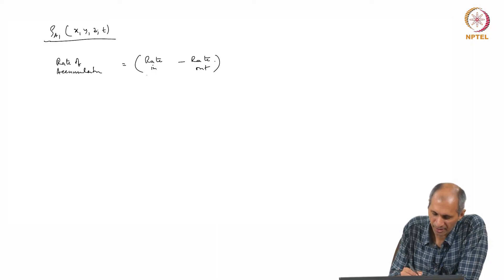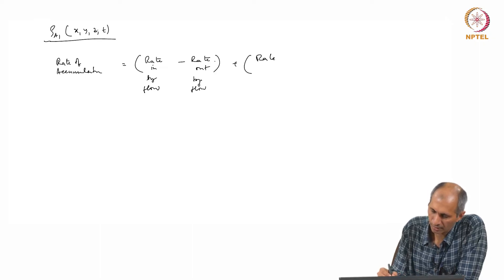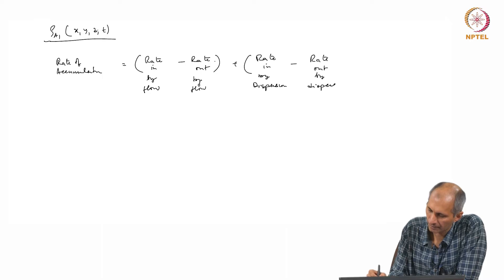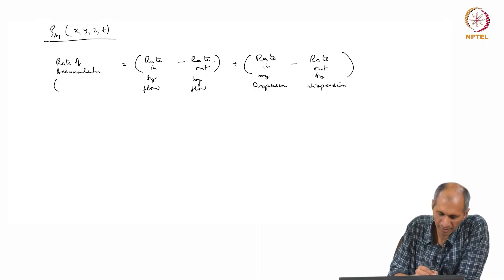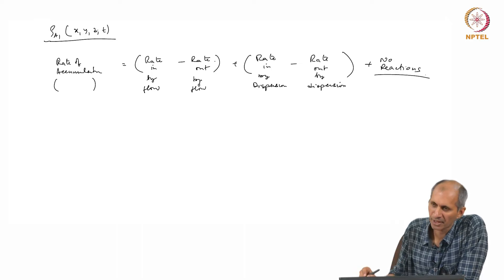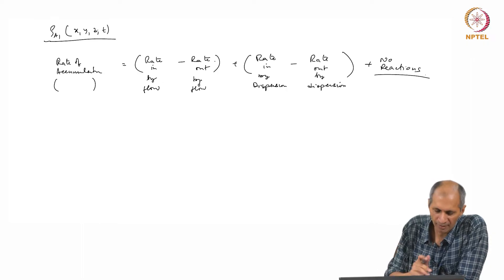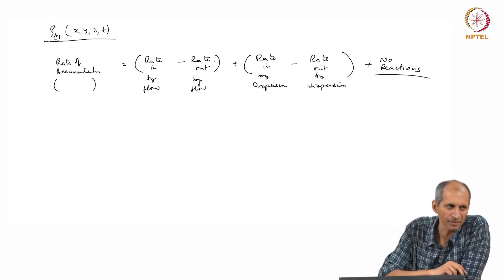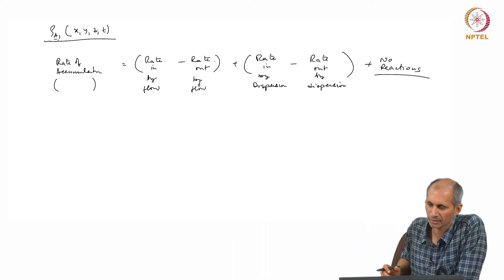Two things may be happening: rate in and rate out — rate in by flow and by dispersion. Nothing else is happening. Rate of accumulation equals rate in minus rate out, and there is no reaction — we are assuming no reactions here. We are also considering only rho A1, which is vapor phase concentration. We are not looking at particulate matter. If you add that, it will also settle down and get trapped in different things.